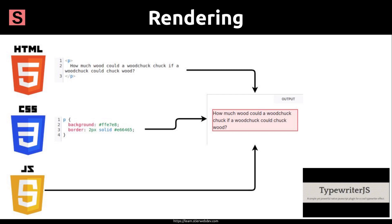In this example, we have some HTML and some CSS. The browser interprets the HTML and displays the content on the screen along with some default styling. That content is the sentence: how much wood could a woodchuck chuck if a woodchuck could chuck wood? Then the browser interprets the CSS and applies the styles to the HTML. The browser will also apply any JavaScript that we've written. In the woodchuck example, we don't have any JavaScript.